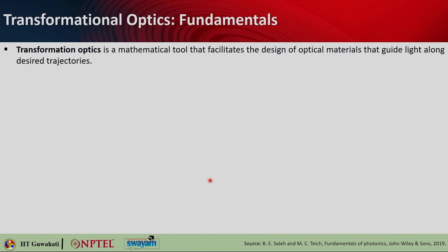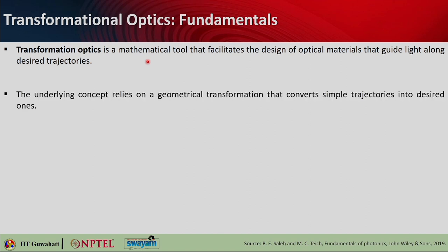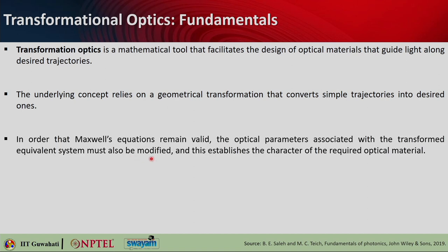The synthesis problem of graded index materials is more challenging than the analysis problem in two respects. First, they require advanced mathematical tools since the refractive index continuously varies. Second, the physical implementation will require metamaterials constructed from components configured in a particular spatial arrangement, supported by current fabrication technology. To overcome these limitations, you can think of transformational optics, which acts as a mathematical tool that facilitates the design of optical materials to guide light along any desired trajectory.